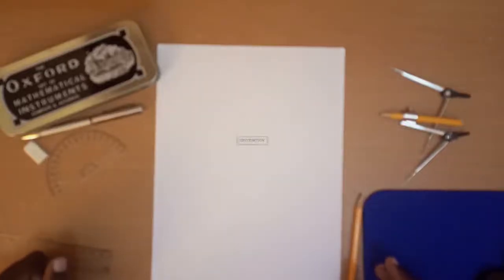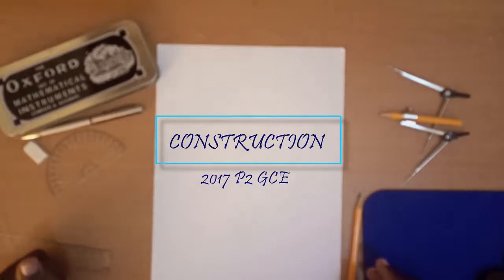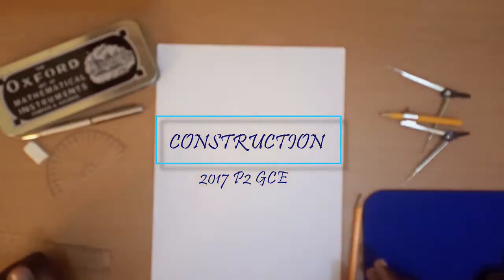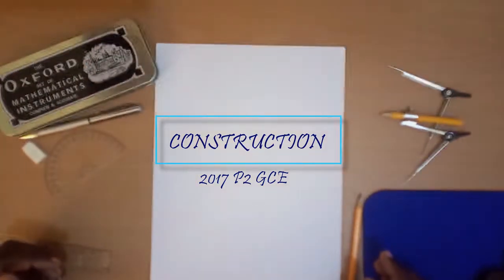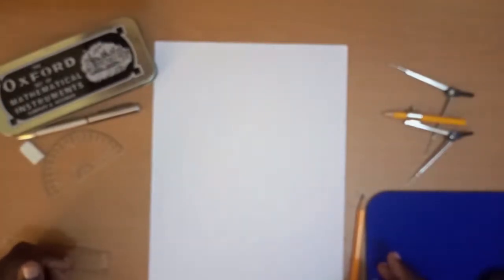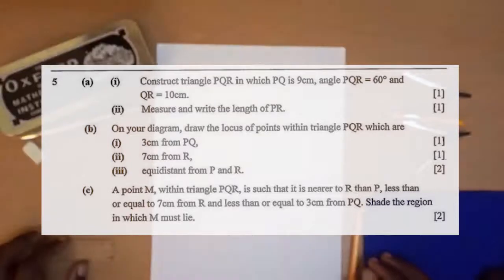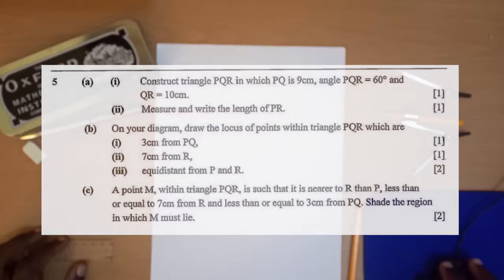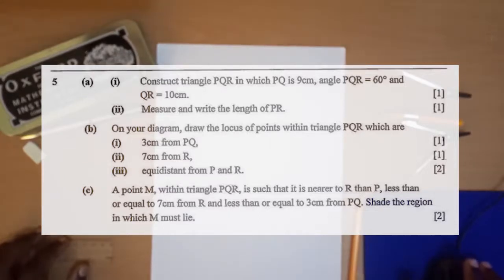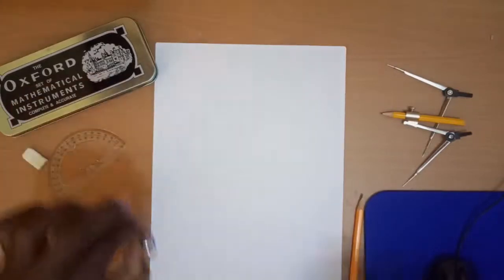In this video we are answering the 2017 Paper 2 construction question that came under GCE. It was question number five. The question says: construct the triangle PQR in which PQ is nine centimeters, angle PQR is equal to 60 degrees, and line QR is equal to 10 centimeters. The second part says: measure and write the length of PR.